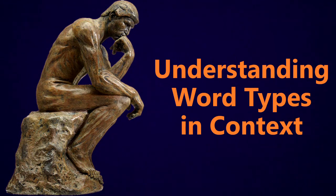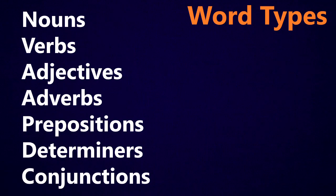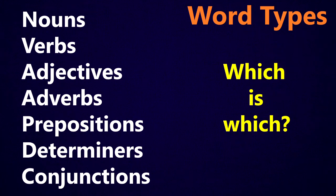What does that mean? In English, we've got seven basic word types: nouns, verbs, adjectives, adverbs, prepositions, determiners, and conjunctions. But the question you might ask yourself is: which one is which? How do I know the difference between a noun and a verb in a sentence, or between an adjective and an adverb, especially when you're reading something in higher level or academic English?